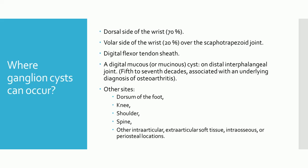Ganglions can also arise from the digital flexor tendon sheath, which has classically been described as arising from the first annular pulley of the fingers. A small mass may be palpable in the flexion crease at the base of the finger. A digital mucous cyst is a ganglion cyst that forms over the dorsal side of the distal interphalangeal joint, occurring most commonly in the fifth to seventh decades and usually associated with an underlying diagnosis of osteoarthritis.